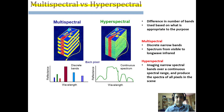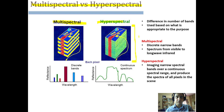We have another classification of remote sensing: multispectral and hyperspectral. Multispectral, as the name indicates, means it has more than two or three bands pertaining to different wavelengths. Hyperspectral has bands that may be more than 10 and can go up to hundreds of bands pertaining to different wavelengths.